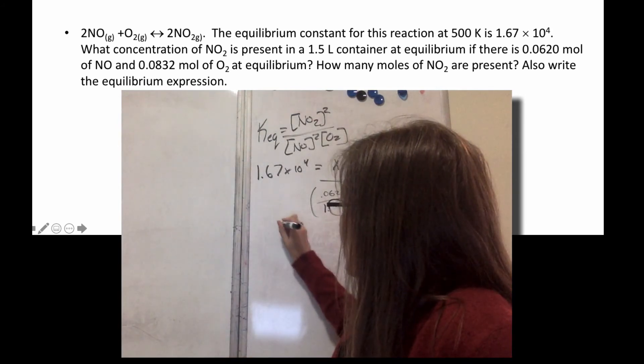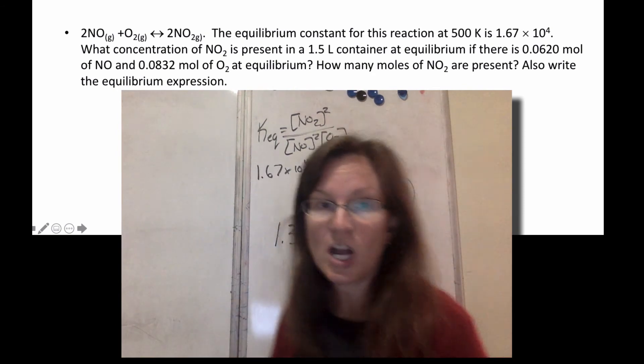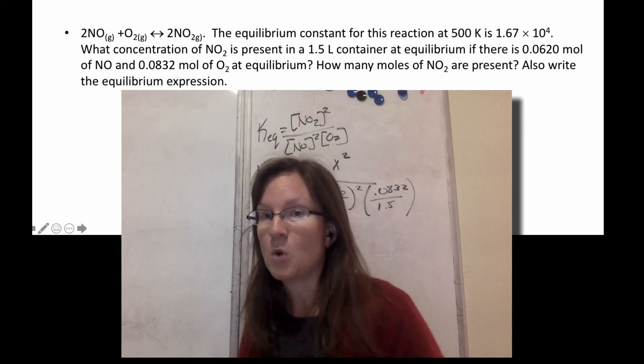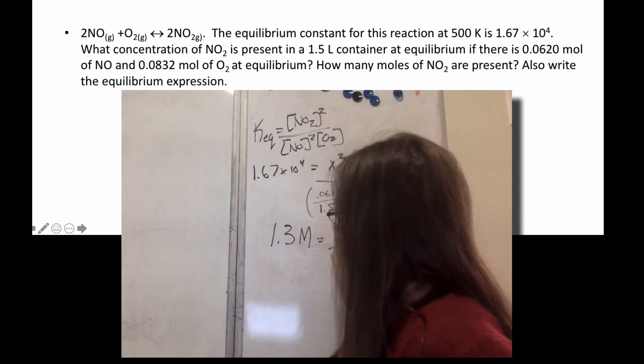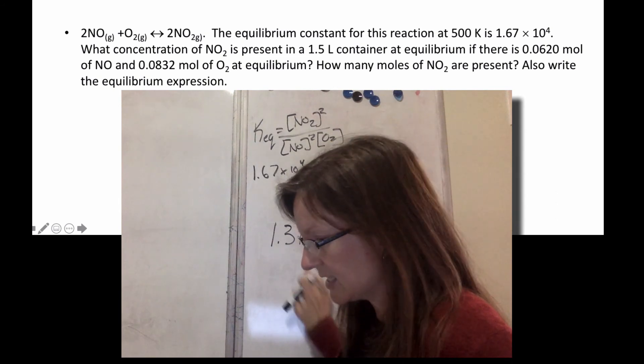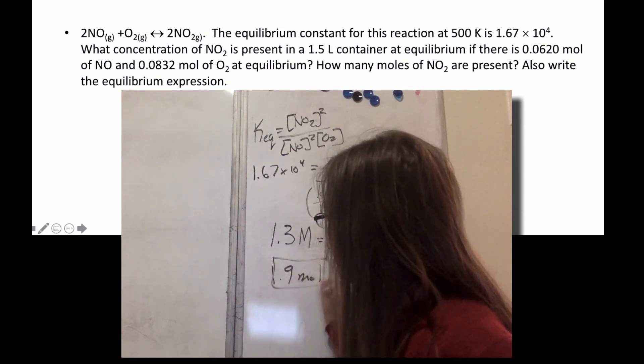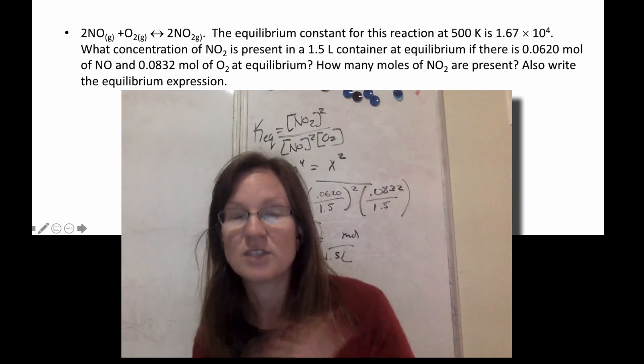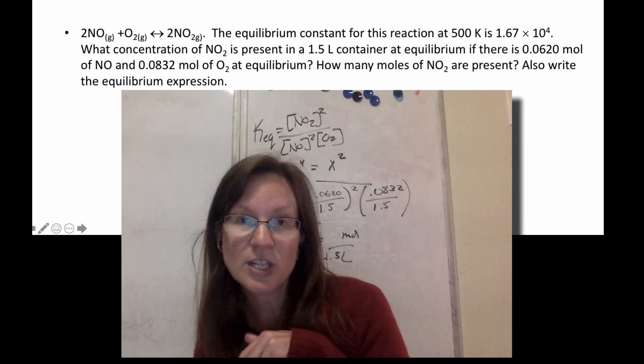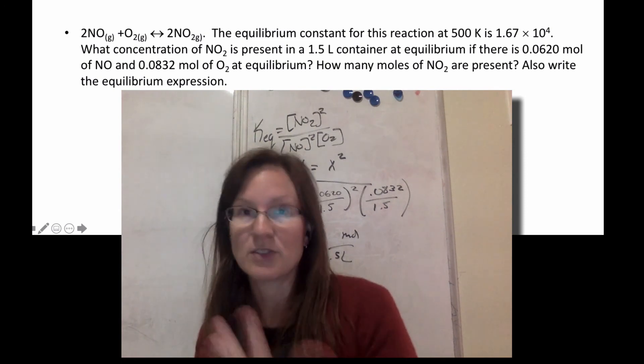And if I rearrange that and solve, I get an answer of 1.3 molarity. This question also asks me to do moles. And to get moles, if you remember, big M is moles per liter. So if I want moles and I know I have 1.5 liters, I would just multiply those two to get that. And if I multiply those two, I get 1.9 mol. So those are your two answers. That's the only math that's on this particular test—just manipulating this equilibrium expression. The only hard part here is no solids or liquids and make sure you're in molarity when you're solving.